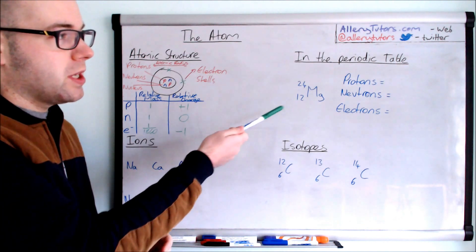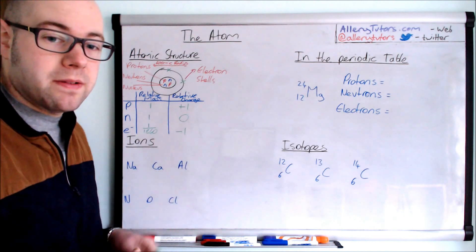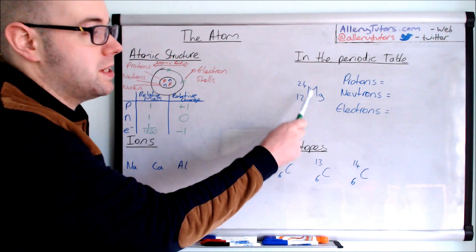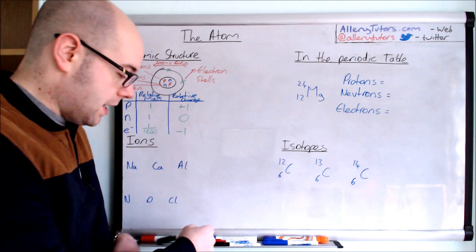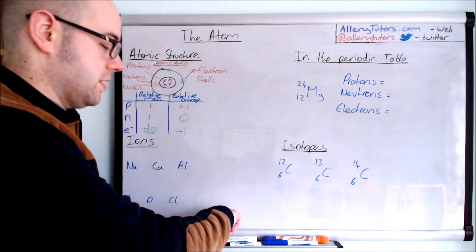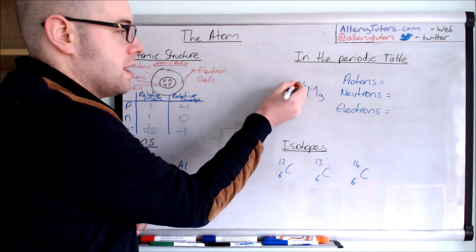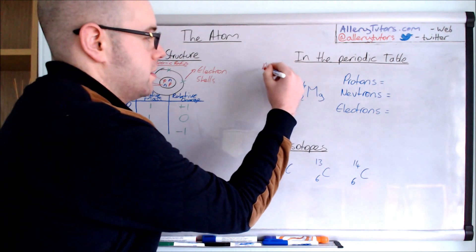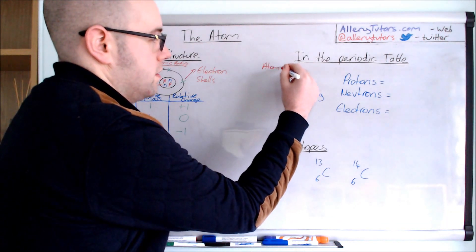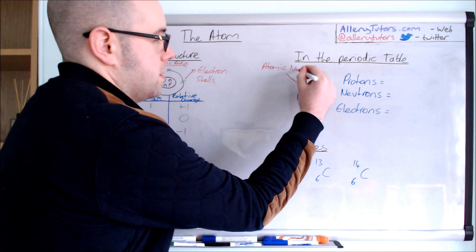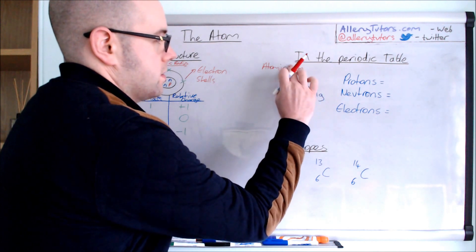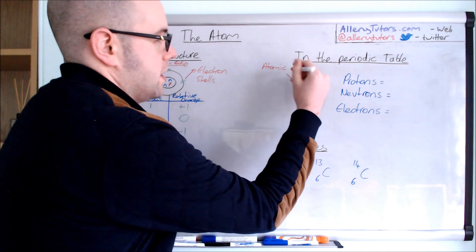So then what we'll do is look at the different components of the periodic table. So you can see here we've got an element. We've got a number at the top and a number at the bottom. And the number at the top, this one is called the atomic mass number.